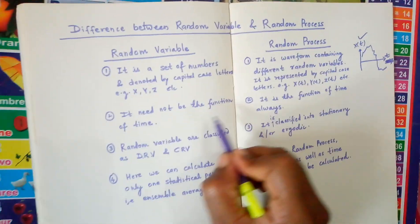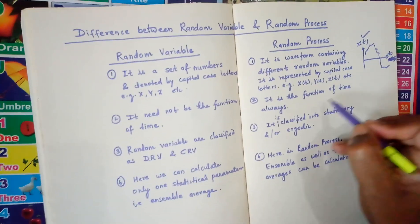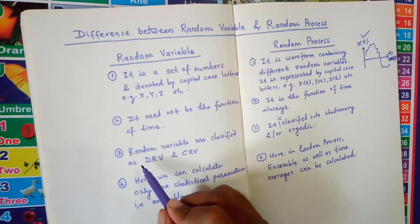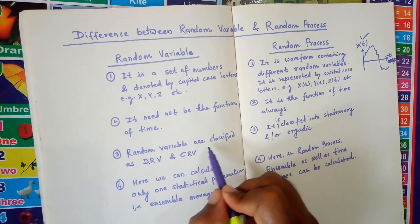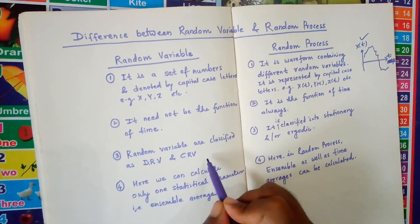Random variable need not be the function of time. Random process is always a function of time. Then difference number 3: random variables are classified as discrete random variable and continuous random variable.